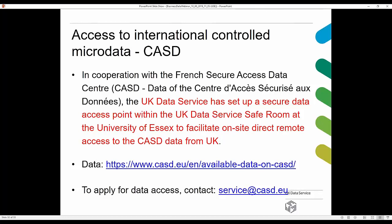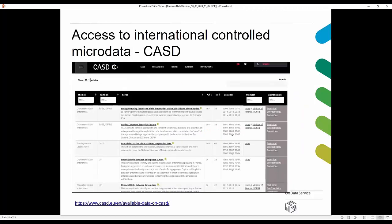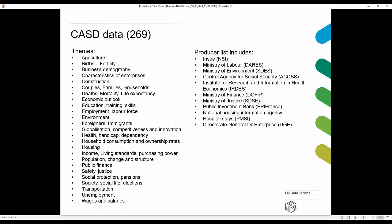The newest development regarding IDIN is cooperation with the French Secure Access Data Centre, CASD. The UK Data Service has set up a secure data access point within the UK Data Service safe room at the University of Essex to facilitate on-site direct remote access to CASD data from the UK. To get an overview of all available CASD data, follow the link, and to apply contact service@casd.eu. Available CASD data includes for example the Financial Links Between Enterprises survey, and many more.